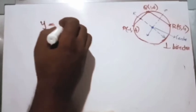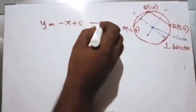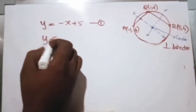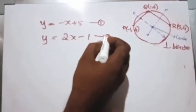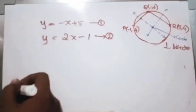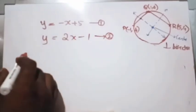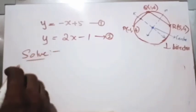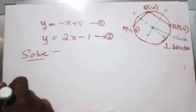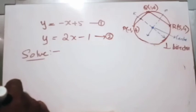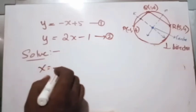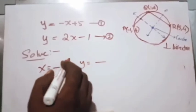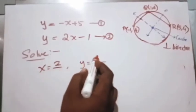The equation of the first perpendicular bisector is y equals minus x plus 5, and the equation of the second perpendicular bisector is y equals 2x minus 1. Solving these two simultaneous equations using either the elimination or substitution method, we get x equals 2 and y equals 3.